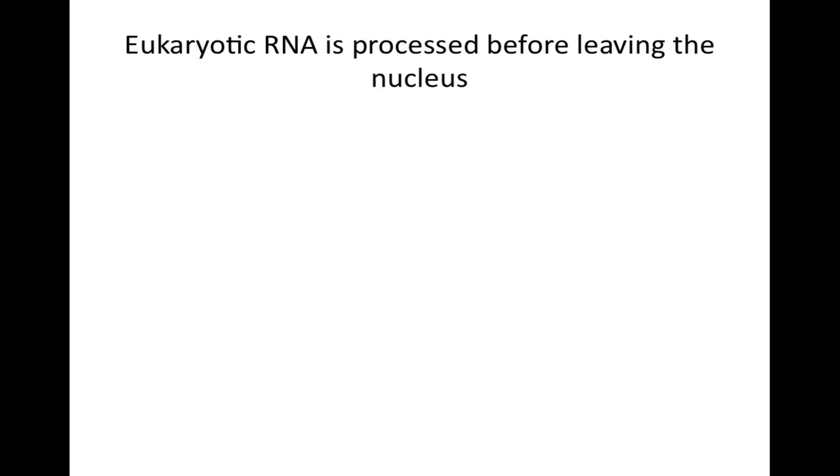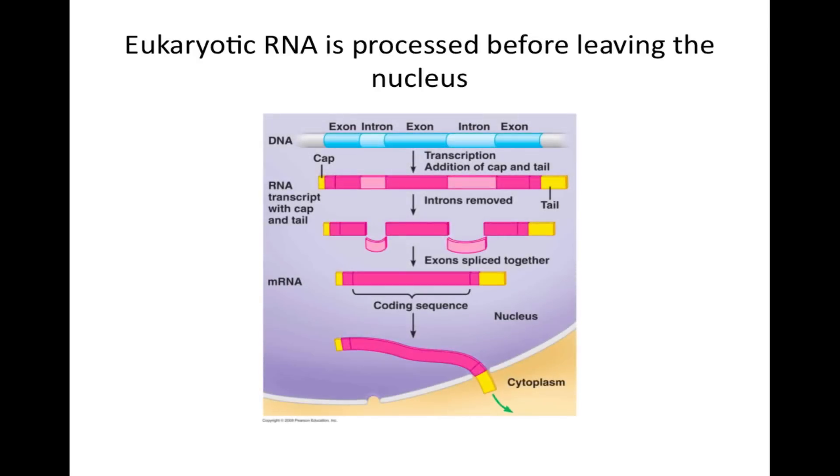Eukaryotic RNA is processed before leaving the nucleus. Before leaving the nucleus, RNA splicing occurs, a process of cutting out the introns and gluing together the exons. Introns are non-coding regions from the RNA, and the exons are the coding regions of the RNA that get expressed as amino acids.